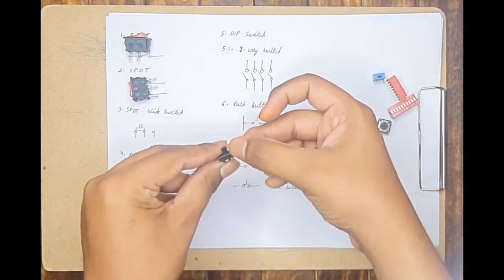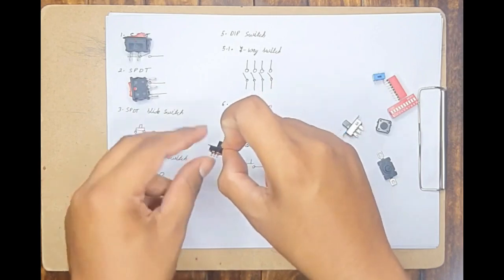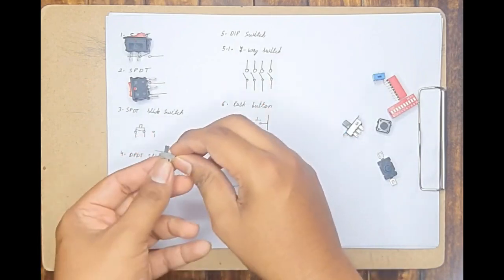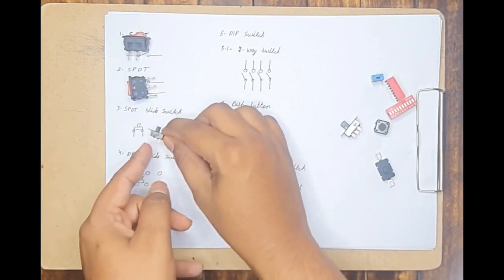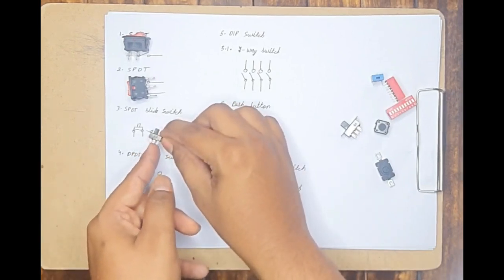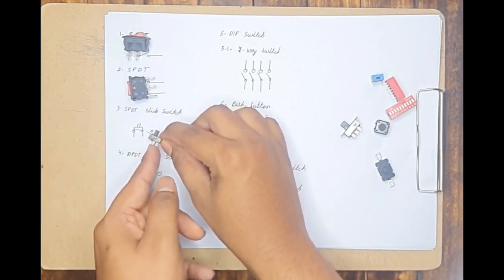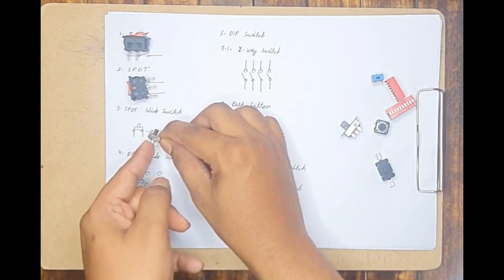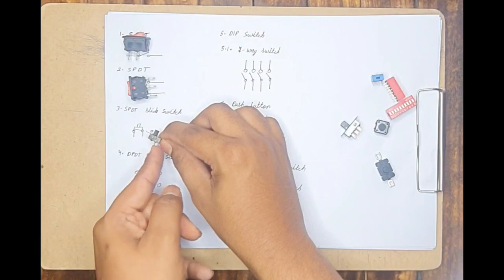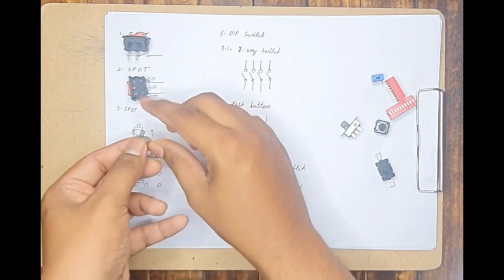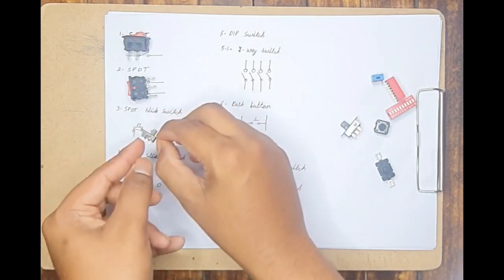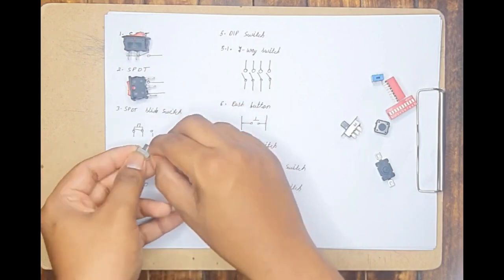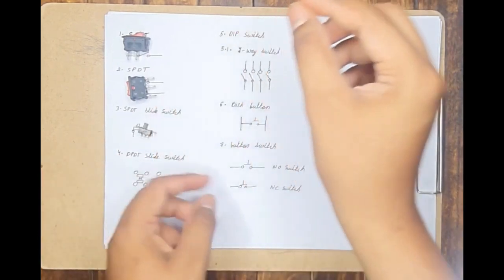The next type of switch I will be talking about is an SPDT slide switch. It has a slider and three terminals. Whenever the slider is in this position, the circuit is in on state between these two terminals and off state between these two terminals — that is it is closed between these two terminals and open between these two terminals. And the moment I push this the circuit is open between these two terminals and closed between those two terminals.